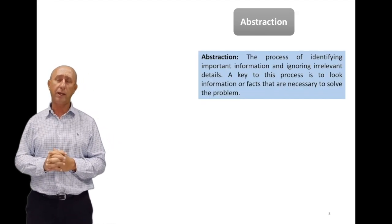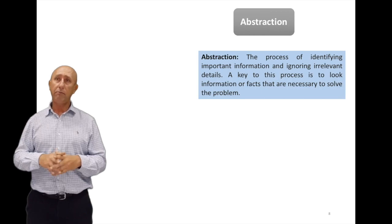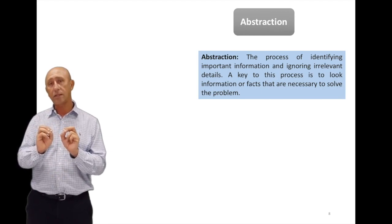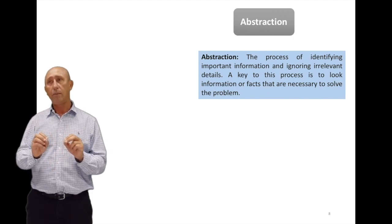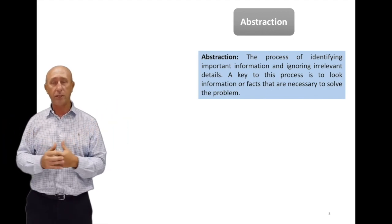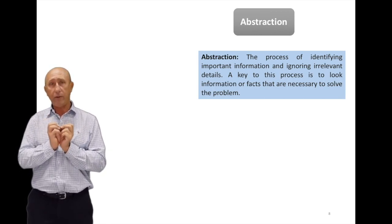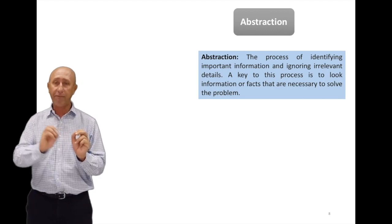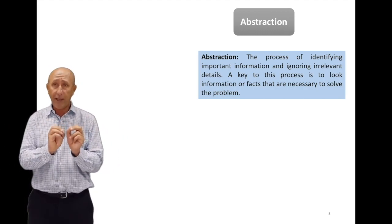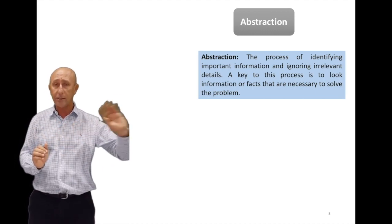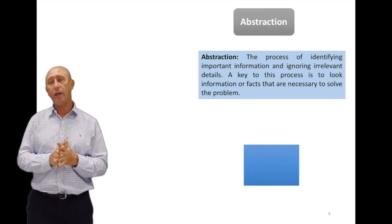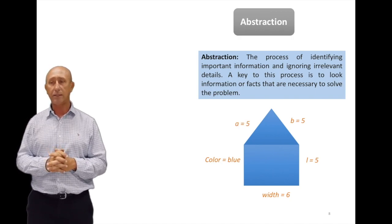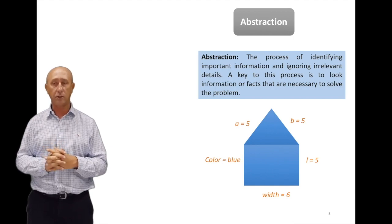The third part is called abstraction. Abstraction in real life: when you are given a problem to solve, you need to focus on the things that are critical to your solution. You don't want to be distracted by all the other information. Now again, this comes with experience. But if you think, the basic thing you need to do is say what is important to my solution, what is not? What plays a factor into solving the problem and what is not? The ones that play a factor, those are important. The ones that are not, you don't worry about them. We have the definition: the process of identifying important information and ignoring irrelevant details. A key to this process is to look for information and facts that are necessary to solve the problem.